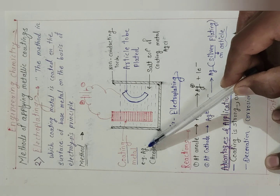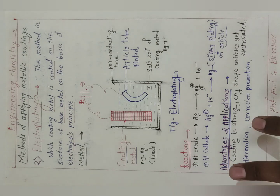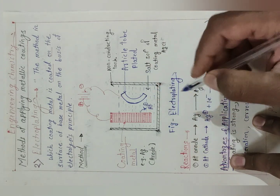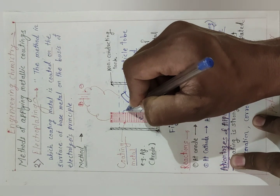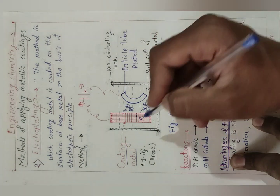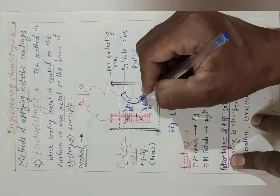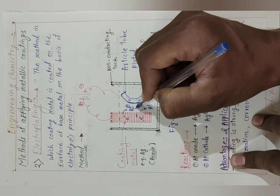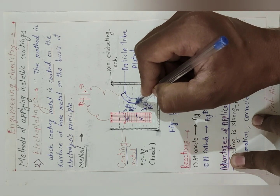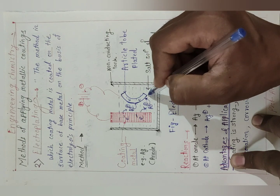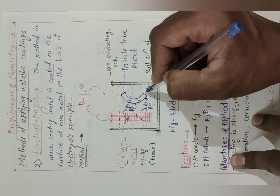The coating metal anode undergoes oxidation. Oxidation of Ag takes place, and after oxidation Ag enters the solution as Ag⁺ while electrons are left behind at the anode. So metal atoms at the surface enter the solution — Ag⁺ is produced and electrons are left behind at the anode. These anodic electrons flow toward the cathode. The cathode surface has electrons, and in solution Ag⁺ ions are present, so Ag⁺ cations are attracted toward the negatively charged cathode surface. Ag⁺ from solution gets attracted to the cathode surface and, by reacting with electrons, gets deposited as a coating.